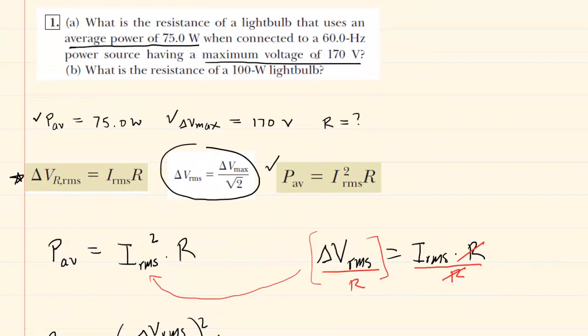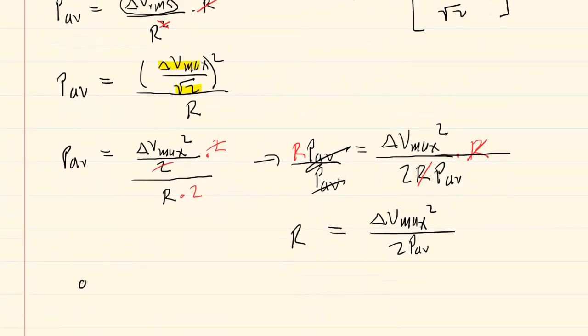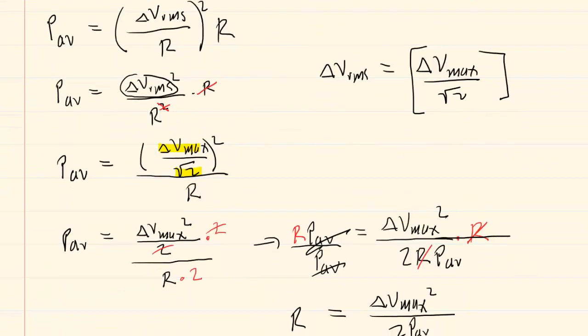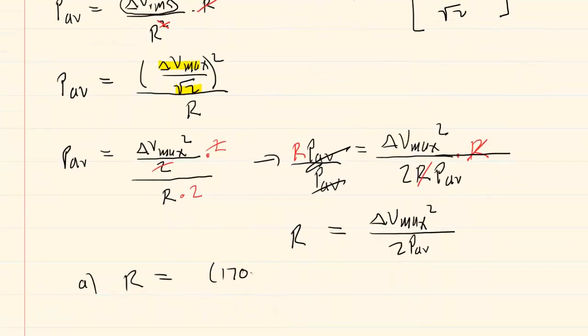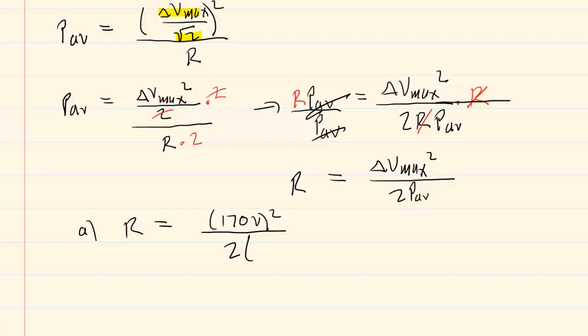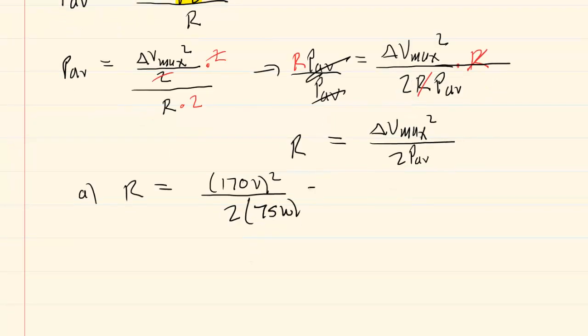We go back up to the question, and we can see that we are going to plug in 75 watts and 170 volts. So for part A, the resistance is equal to 170 volts squared over two times the power, which was 75 watts. So let's plug this in. And when we do so, we will get a resistance of about 193, and the standard unit is ohms. So this is the correct answer for part A.